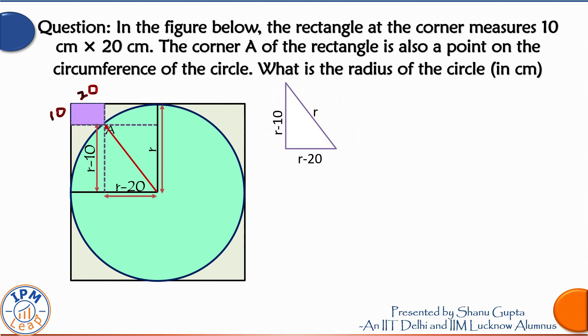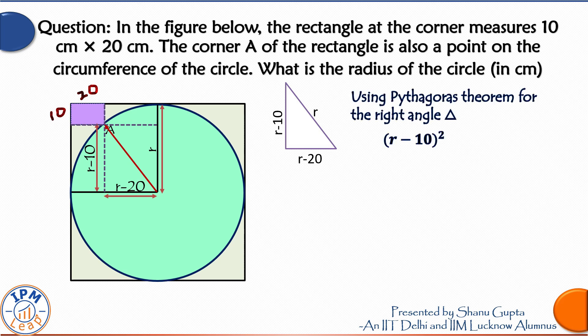So R minus 10 whole square plus R minus 20 whole square is equal to R square. Expanding these terms, we get R square minus 20R plus 100 plus R square minus 40R plus 400 is equal to R square.